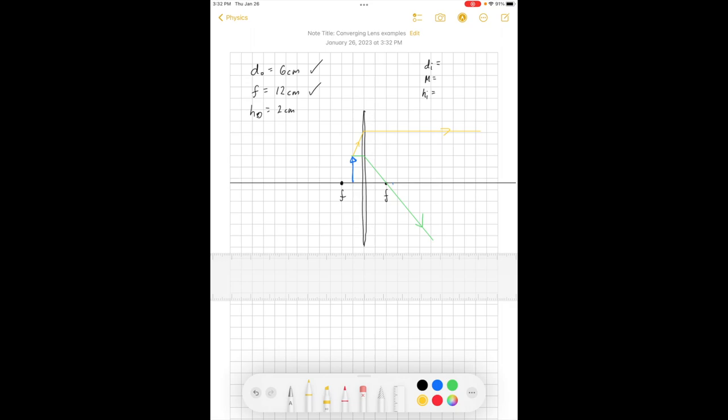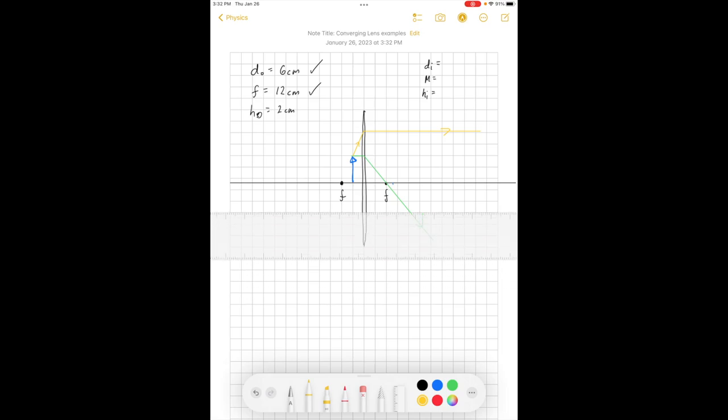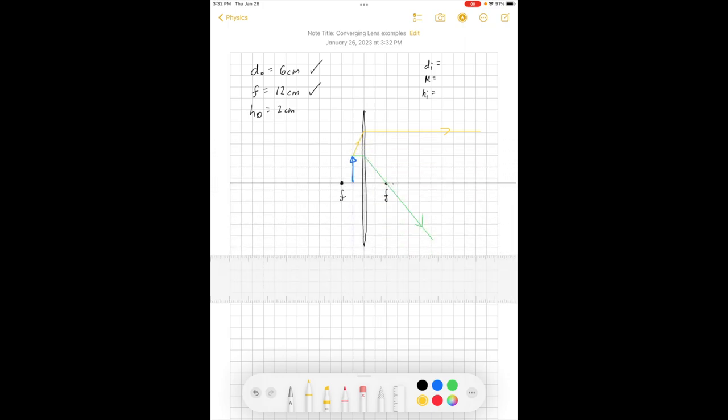You can already see that these rays are not going to intersect anywhere on the right side of this diagram. That's an indication that we probably need to go back and start asking the question, if somebody was over here looking at what was going on,